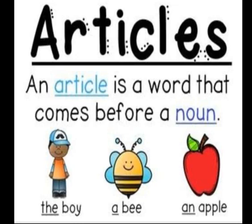So boy, bee, apple — all these are nouns. The, a, an — these are articles. Article is also called determiners. Article ko hum determiners bhi kehte hai. Determiners are those which are used before a noun to indicate about which person or thing we are referring to.